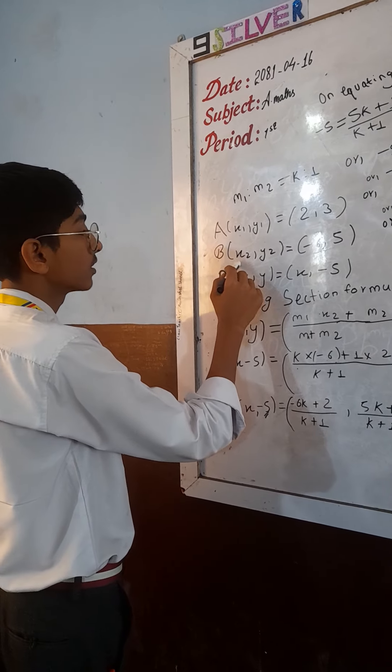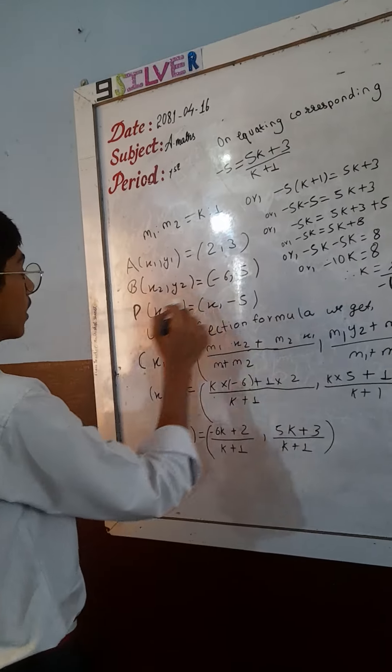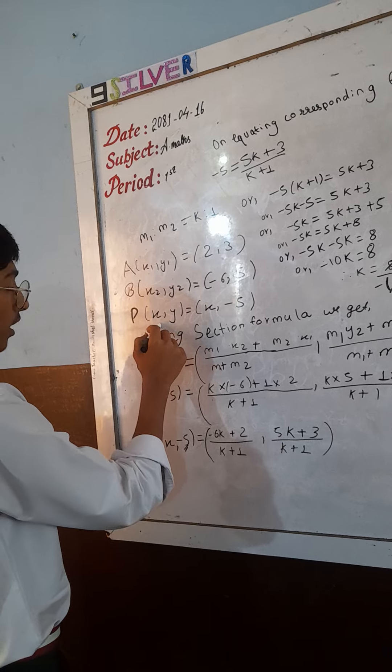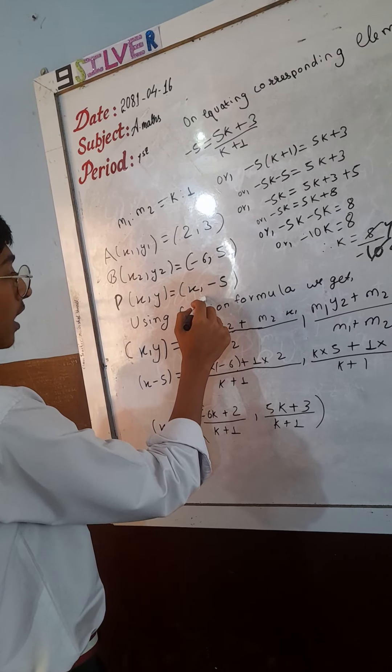B is equal to X2. Y2 is equal to minus 6 comma 5. B is X1. XY is equal to X comma minus 5.